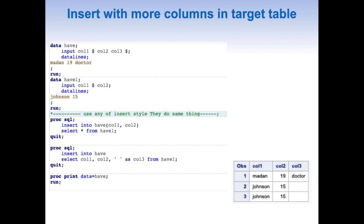The key idea is to map variables of 'have' to 'have1' by position, and positions must always match. If we mention two variables in the INSERT clause, we must also select two columns. If the target has three variables, we must ensure three columns appear in the SELECT. The number of variables in INSERT must always match the number in SELECT. A PROC PRINT confirms both insert approaches produce the expected results.